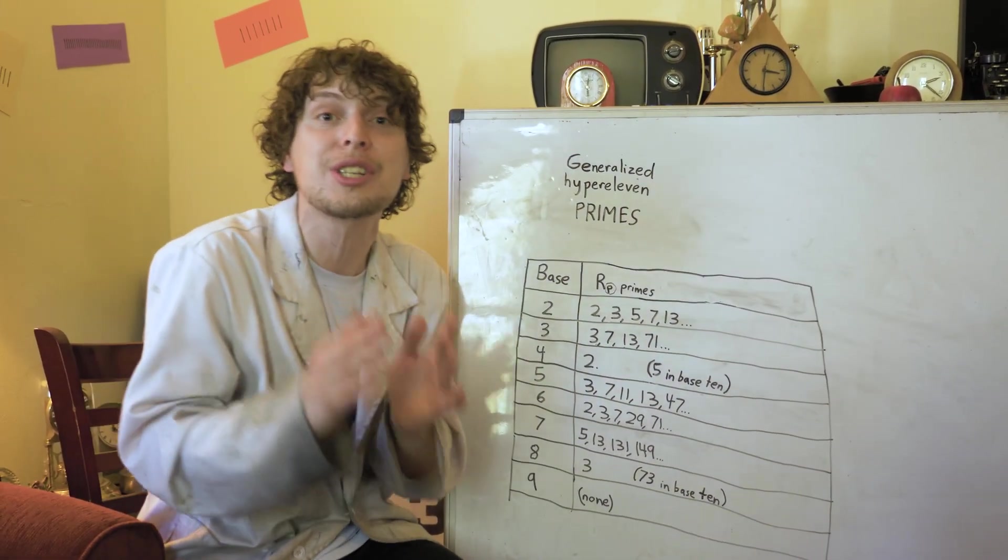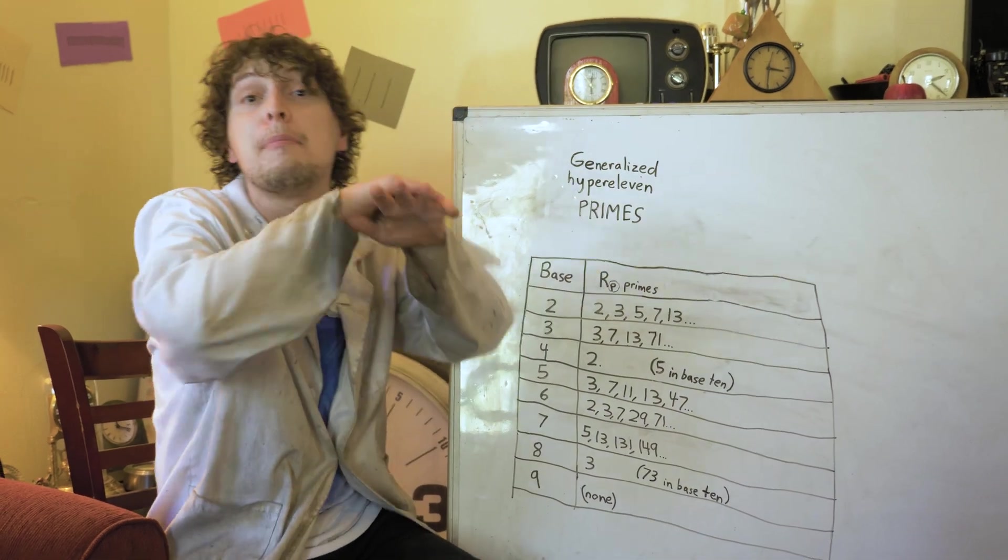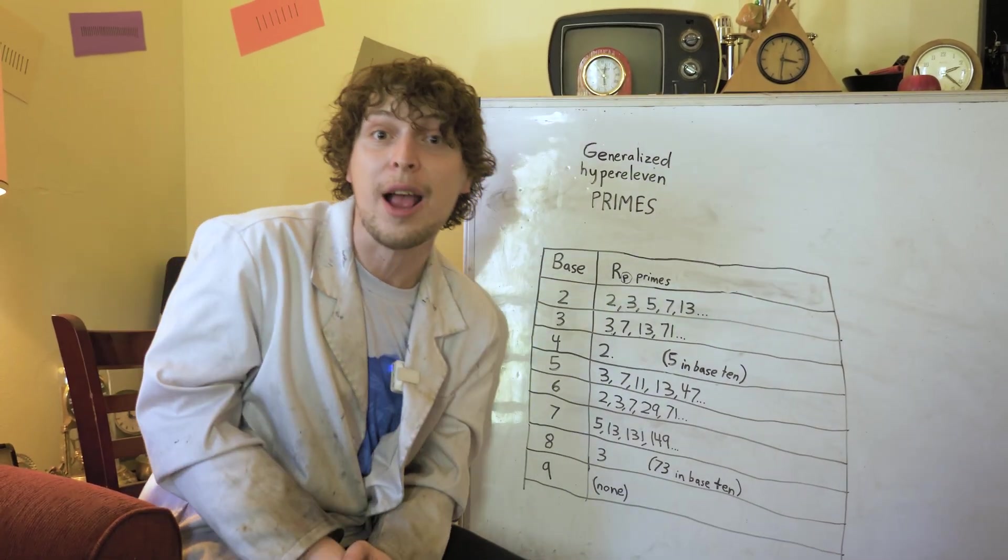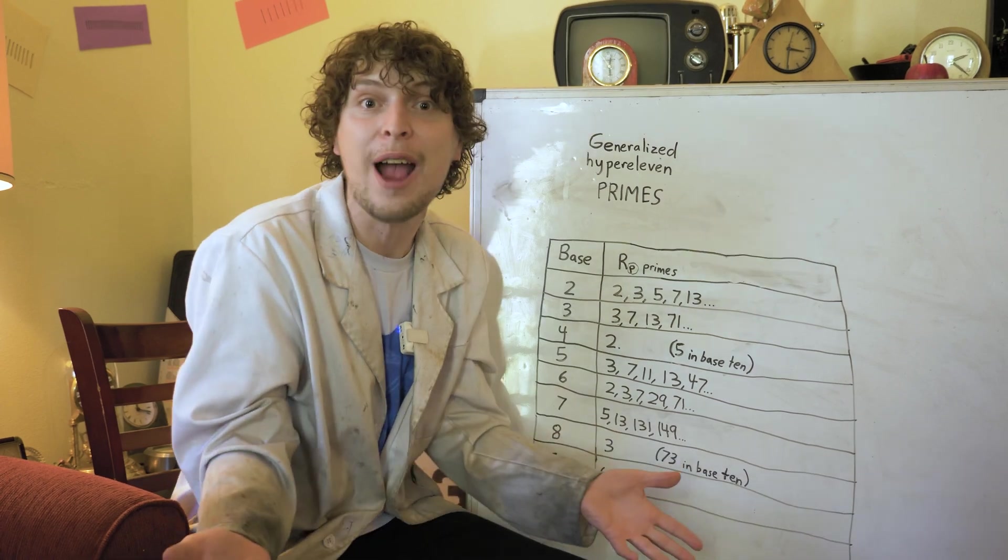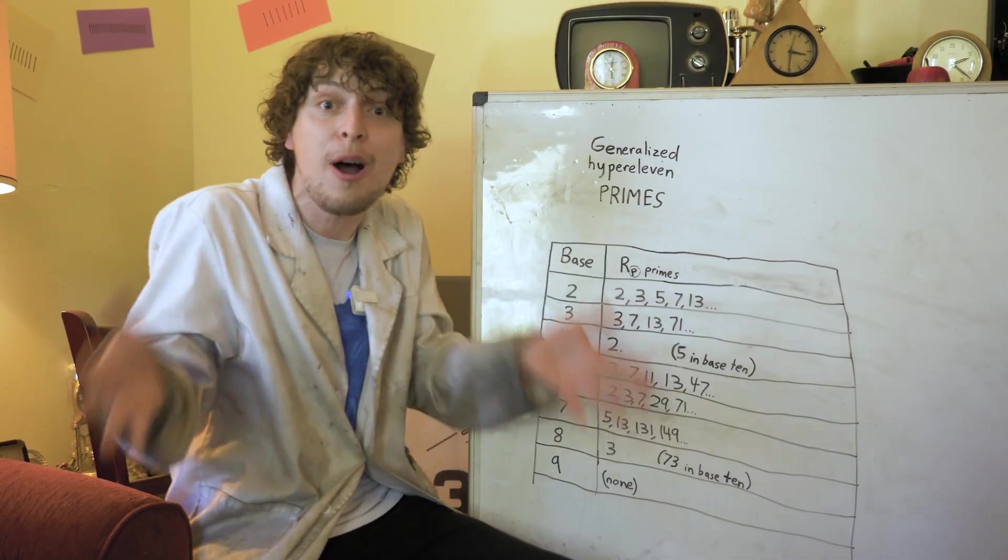And we notice that the amount of ones in them are all prime numbers too, because that rule from earlier still holds, where if there's a composite number of ones in our hyper 11, it will divide some earlier hyper 11 that that composite number could divide.